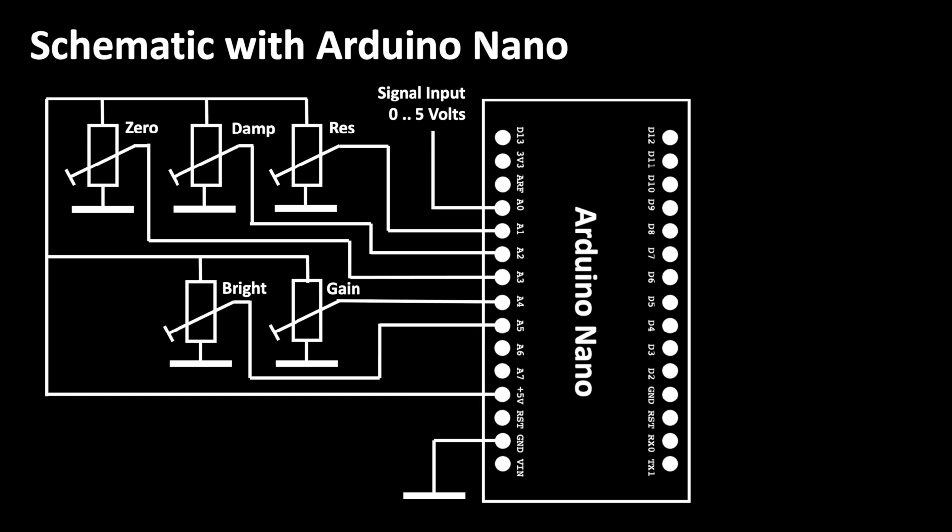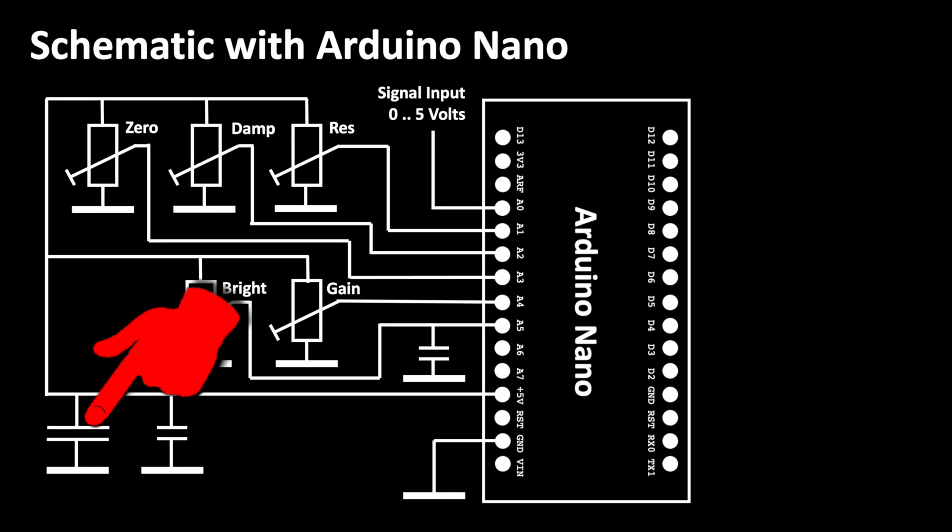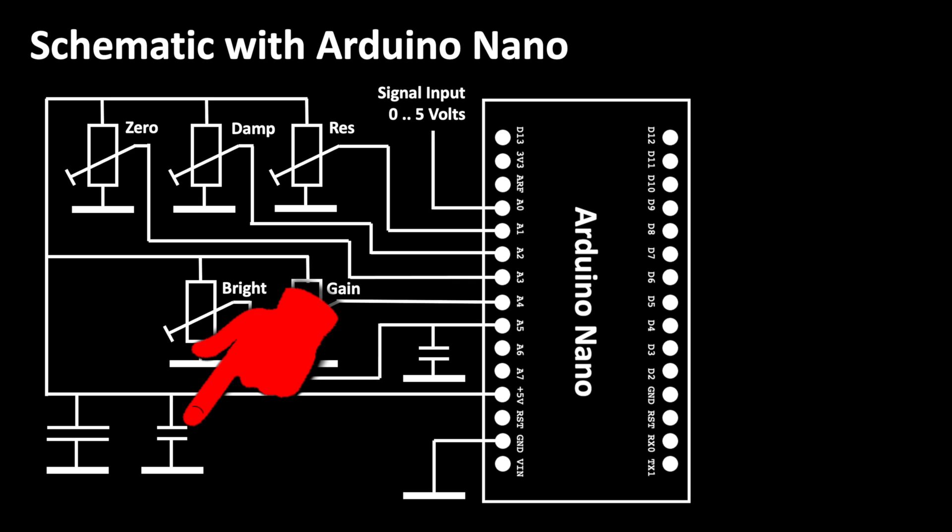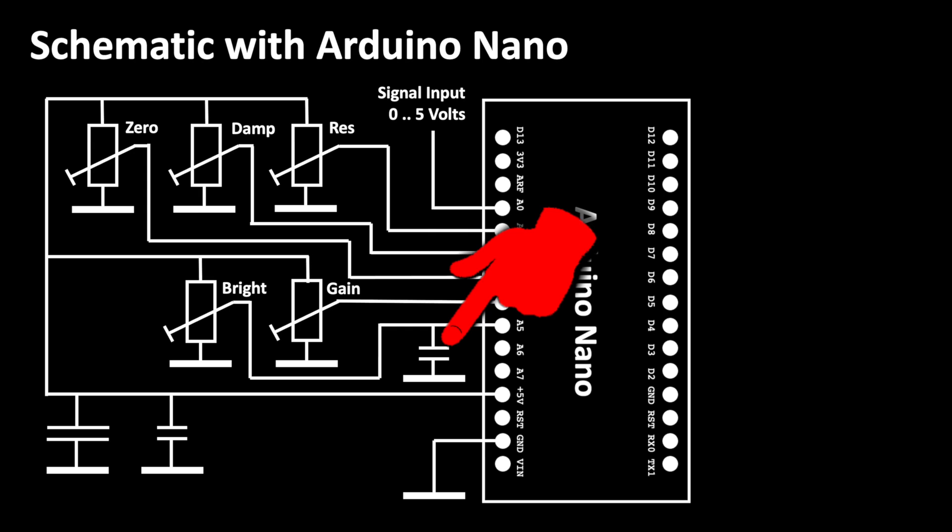It's definitely a good idea to stabilize the DC voltages with capacitors because the Arduino generates current spikes that could interfere here. To stabilize slow voltage dribbles I built in a 50 µF electrolytic capacitor. Rapid dribbles are reduced by ceramic capacitors each with a capacitance of 10 nF.